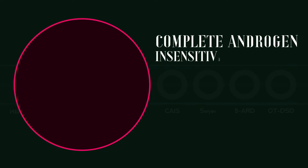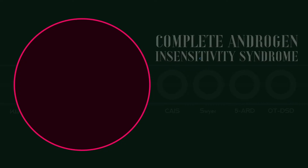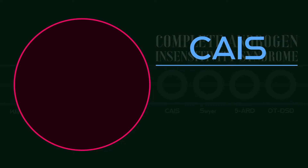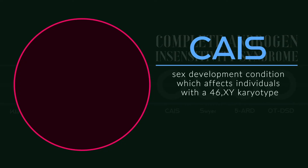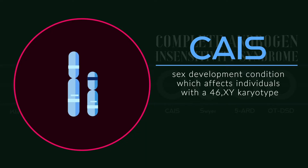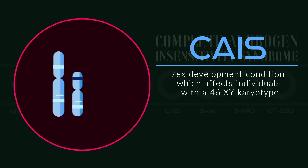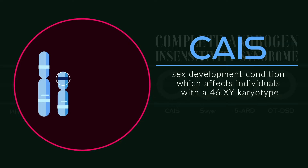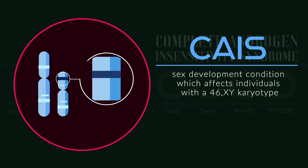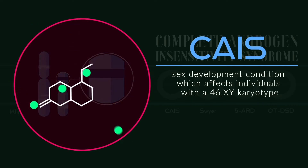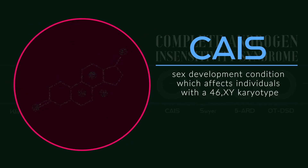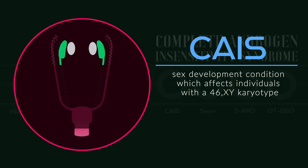Complete Androgen Insensitivity Syndrome, or CAIS, is a sex development condition which affects individuals with a 46XY karyotype. Because those with CAIS have an active SRY gene, they develop internal testes, but because their bodies do not respond to the sex hormone known as androgen, affected individuals are usually born with a female phenotype.